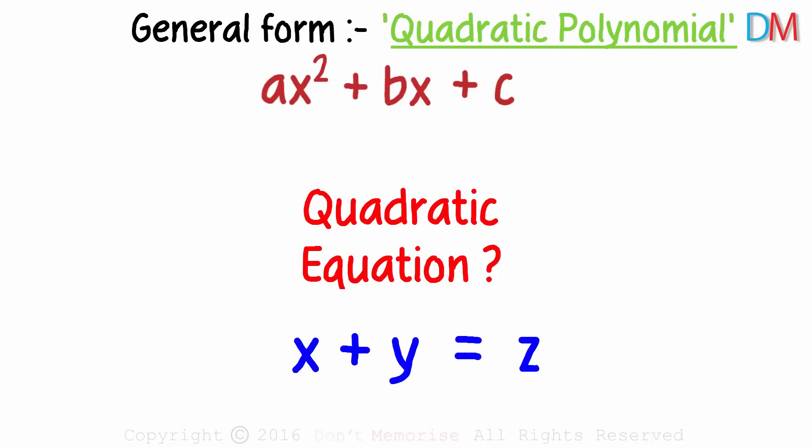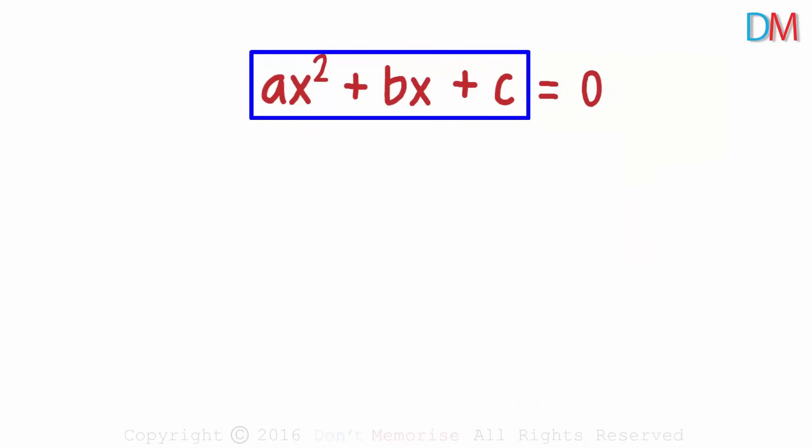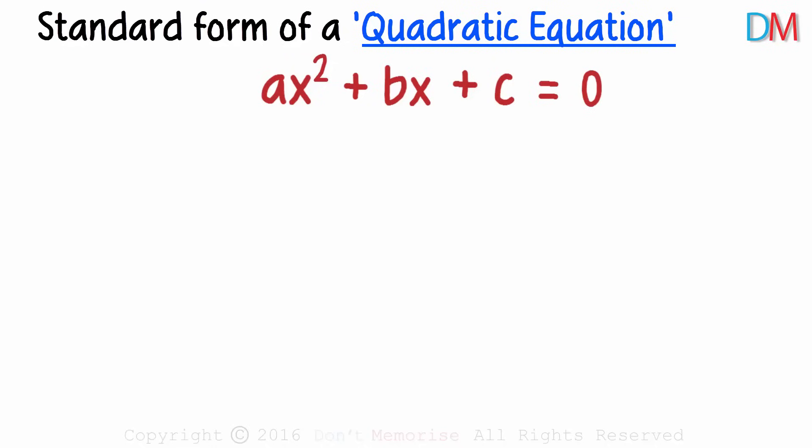An equation, as we know, always has two sides, one on each side of the equal to sign. When we equate this general form of a quadratic polynomial to zero, we get the general or standard form of a quadratic equation.